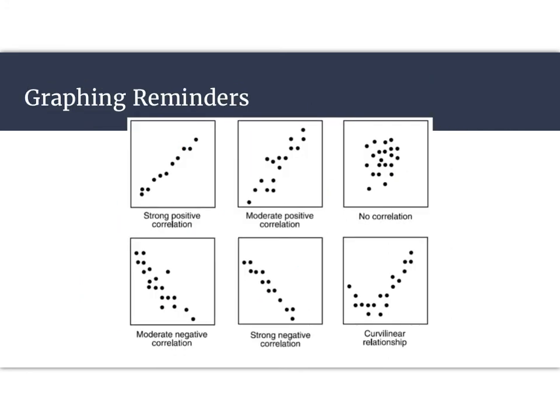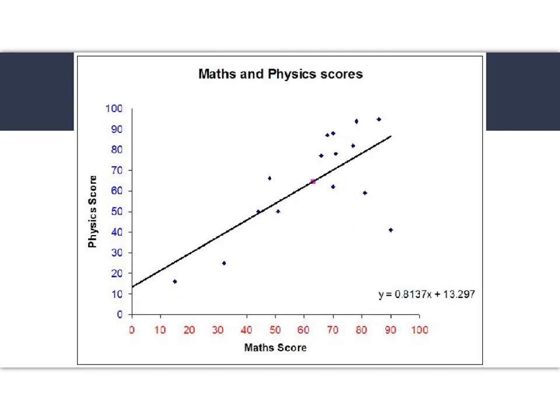Lastly, some reminders for graphing that we have our correlations memorized. So my positive correlations, my negative correlations, no correlation, and then this curvy linear correlation. So we kind of see this swoosh pattern. So something that we'll be working on this year is looking at scatter plots and actually making our line of best fit.